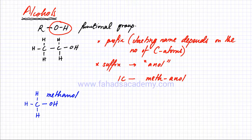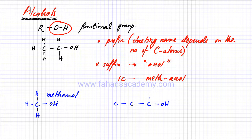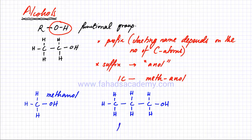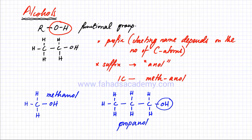Similarly, we can draw a few more alcohols. Let's draw a three-carbon-atom alcohol with an OH group attached at the very end. This carbon atom will have two more bonds with hydrogen, this one will also have two more bonds with hydrogen, and the last one has three more bonds with hydrogen since it was only making one bond before. The name of this molecule — it has three carbon atoms, so the name would start with 'prop-', followed by '-anol', which gives propanol.